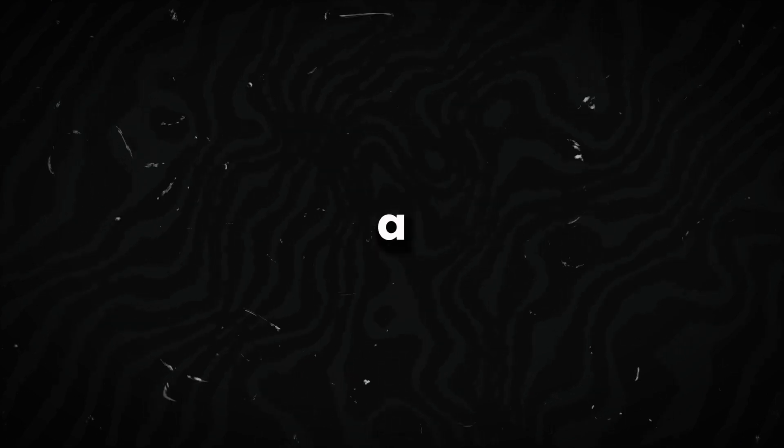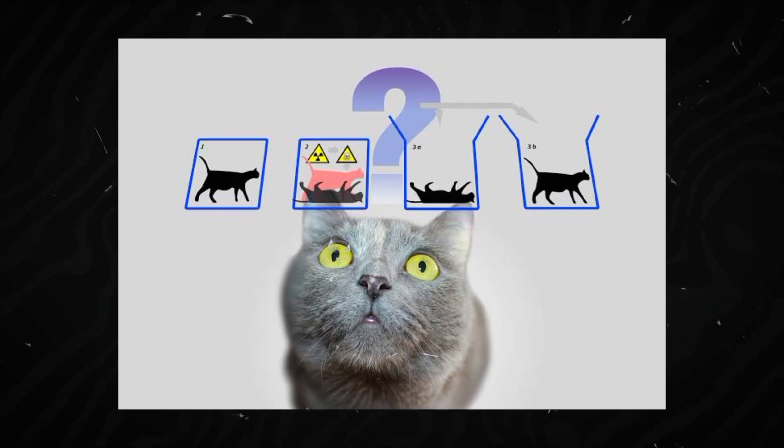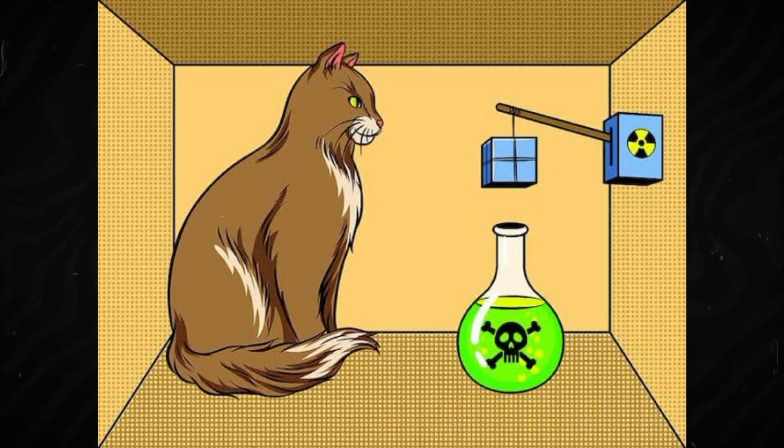This experiment shows that particles can exist in multiple states at once, a concept known as superposition. It's like a cat being both alive and dead at the same time until you check on it. It's called Schrodinger's cat.